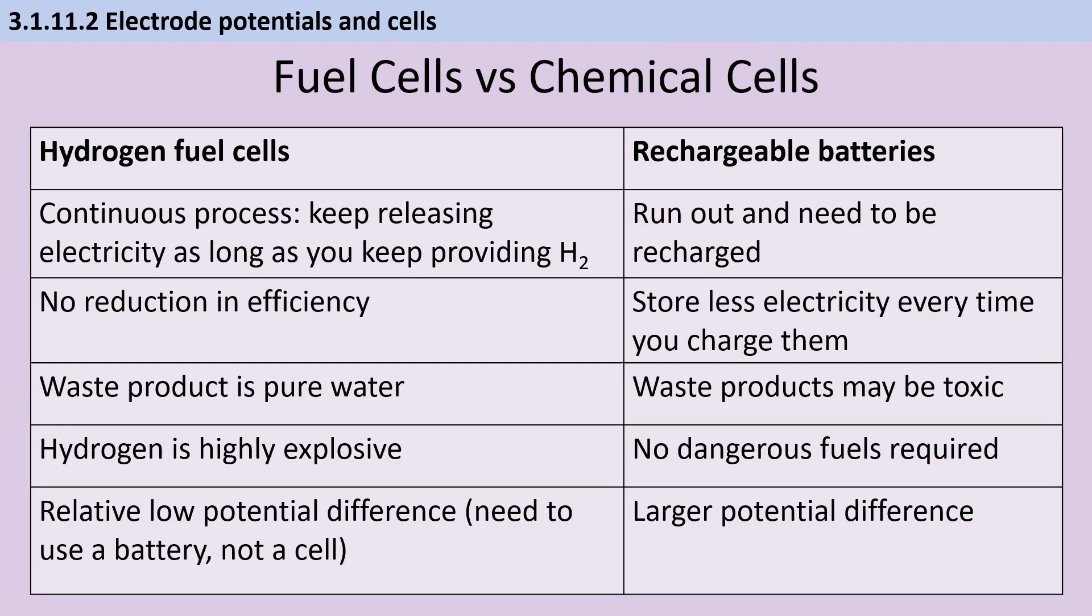You may be asked to compare the use of hydrogen or methanol fuel cells to using chemical cells. The fuel cell uses a continuous process, whereas any chemical cell can run out of fuel as it's a batch process. With a rechargeable cell, each time you charge, it stores slightly less energy. And compared to a continuous process like a fuel cell, there's a reduction in efficiency. Oxidising hydrogen doesn't produce any toxic waste products or greenhouse gases like carbon dioxide. Part of the drive for developing rechargeable batteries is that lots of them have really toxic or corrosive chemicals in them. So the waste products may be toxic when it's time to finally get rid of them.